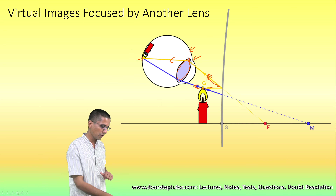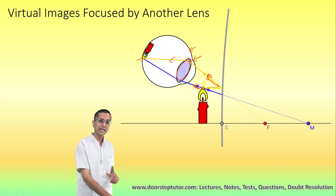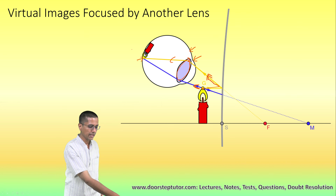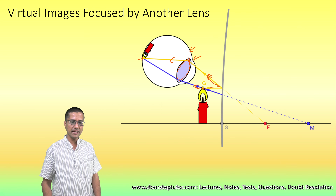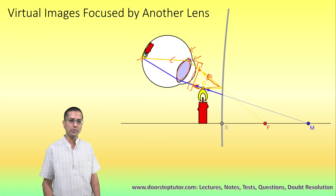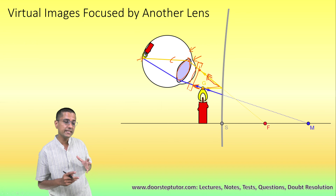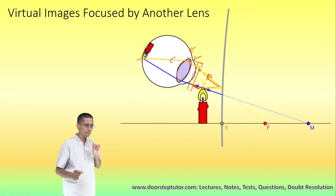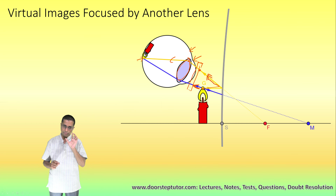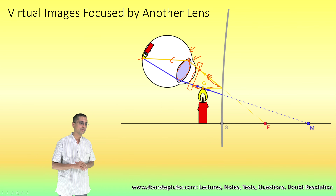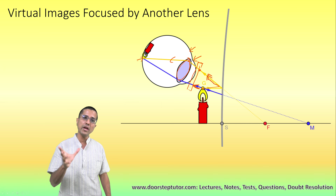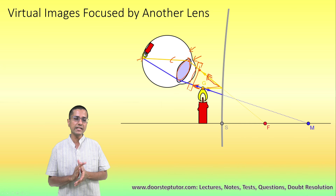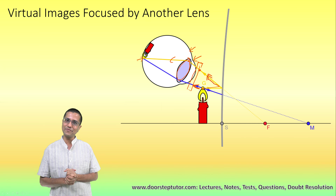Virtual images cannot directly be projected on a screen. Do not get confused when someone says virtual images can be seen by the eye but not on the screen — the reason is that the eye has a converging lens. Even after divergence, the rays pass through this converging lens, are brought together, and the image is formed on the retina. If you directly put a screen instead of the eye, you cannot converge those rays. Hopefully this is clear — thank you.